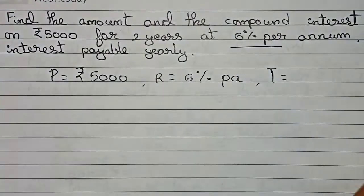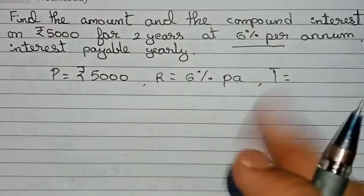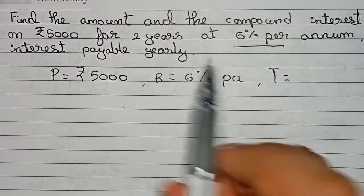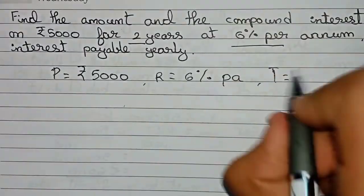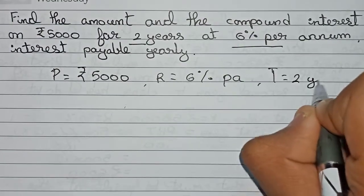And time will be equal to... In simple interest formula we used to take time as one year, but in compound interest we will take the time as two years directly. So time equals two years.